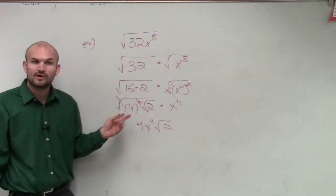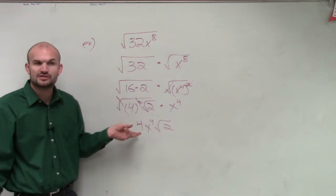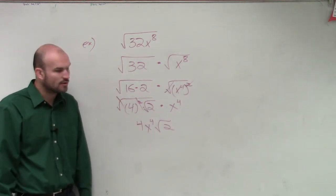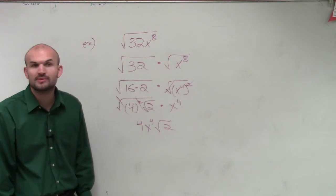However, the square root of 4 squared, or 16, we obviously know the answer is just going to be a 4. So therefore, my final answer is 4 x to the fourth square root of 2. Anybody have any questions on that?